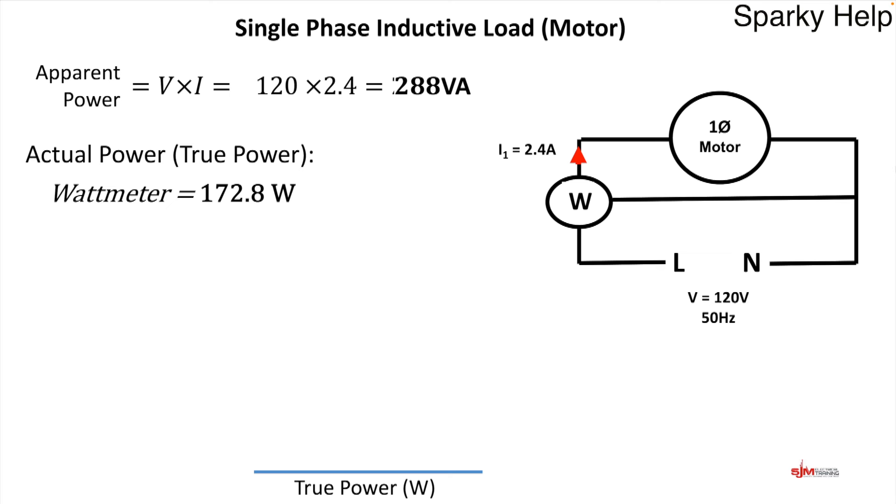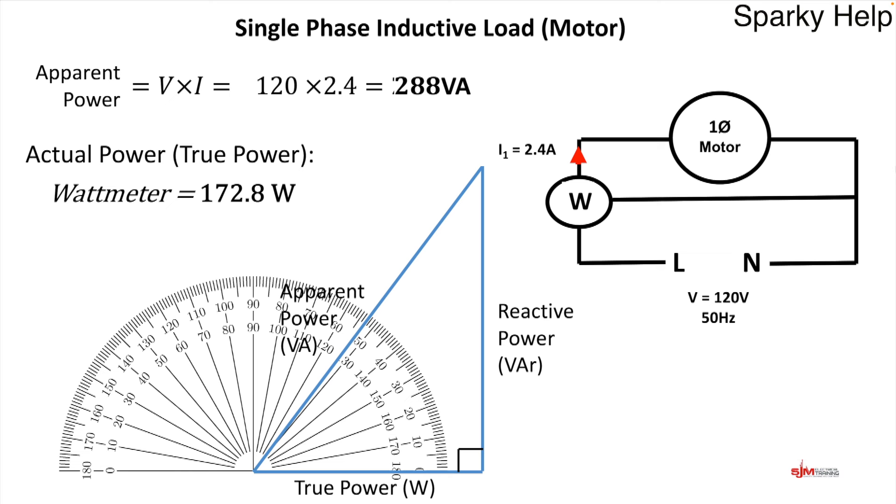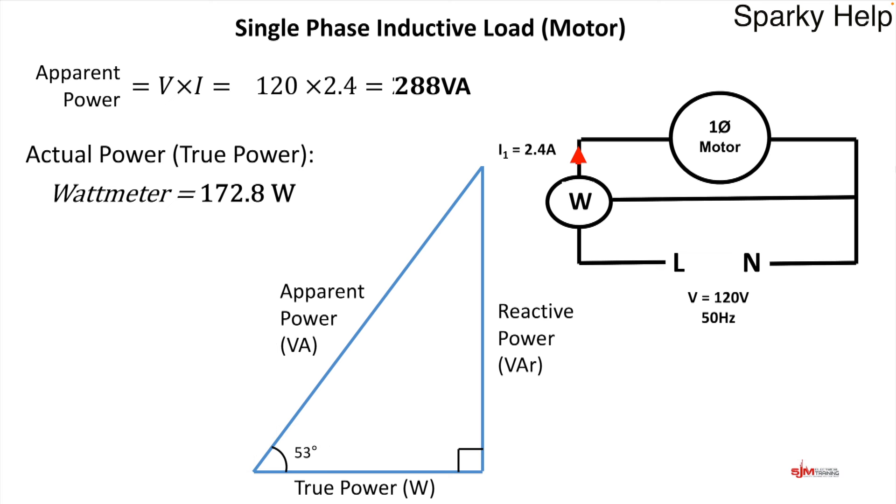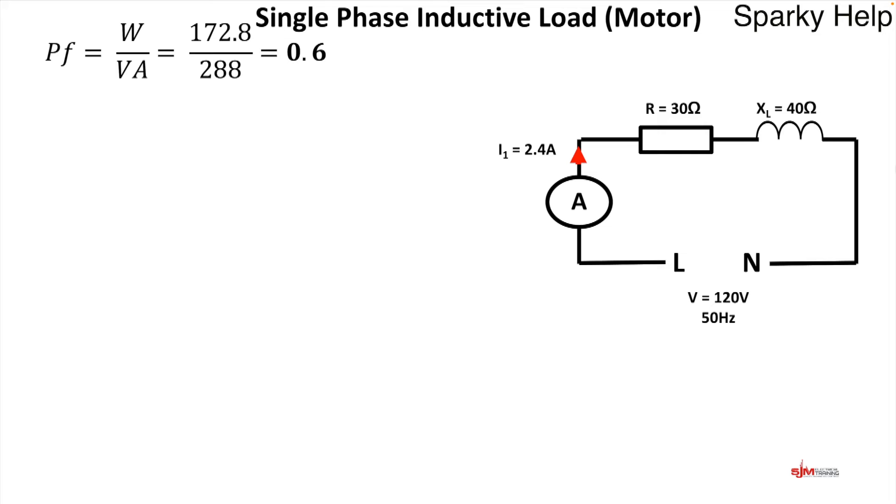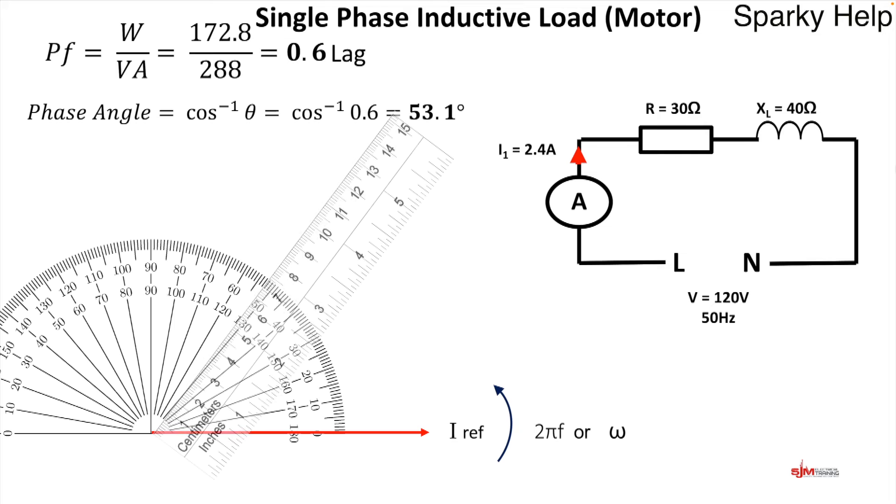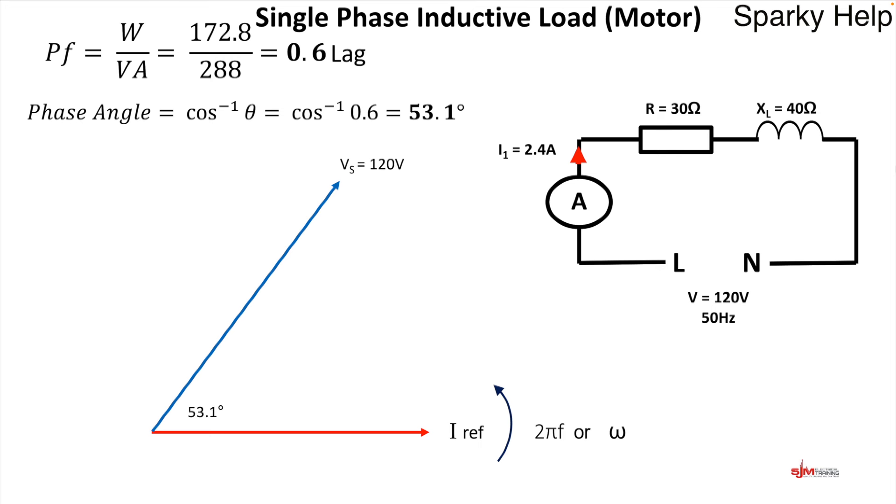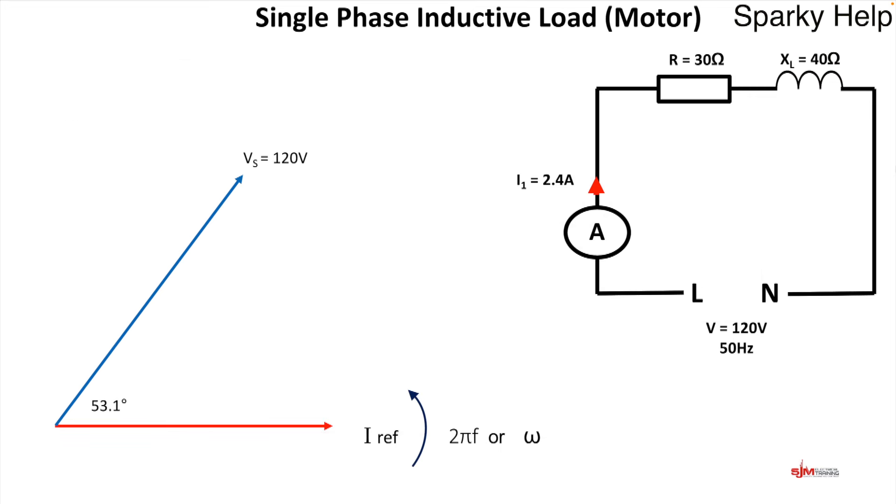What we can do then, we can draw the power triangle for that. So true power is 172 and that goes horizontal. And we know this is at 53 degrees. And that would be your VA. And the vertical part would be the reactive part of that particular circuit. And the angle there, as we say, would be 53 degrees. So there's a power triangle for this here. So we've got lots of reactive power. And we're drawing more current from the supply than we actually need to make it work.